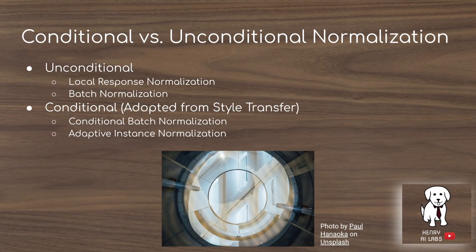This is the idea of conditional versus unconditional normalization. Local response normalization used in AlexNet and standard batch normalization don't really depend on any input — they're not designed to do so. The conditional normalization layers are adopted from style transfer, where you're trying to take the style of one image, mix it with the content of another, and preserve semantic features in the intermediate feature space. It's found that doing this in the batch normalization layers works much better than just concatenating the prior information onto the intermediate feature tensors.